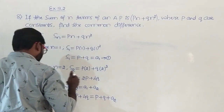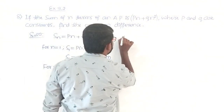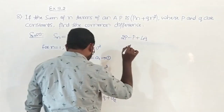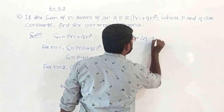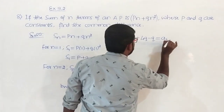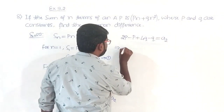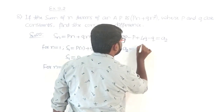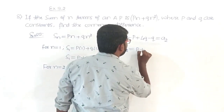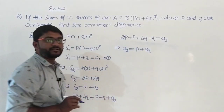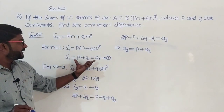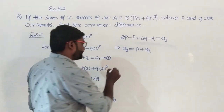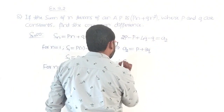So we get 2p minus p plus 4q minus q equals a2. This implies a2 equals p plus 3q. We now have a2 and a1, so the common difference is going to be a2 minus a1.